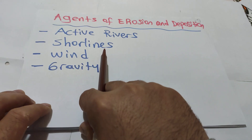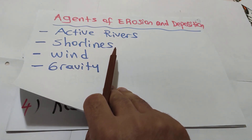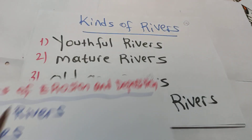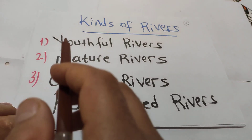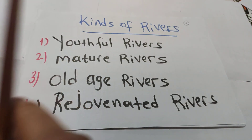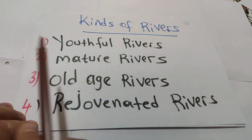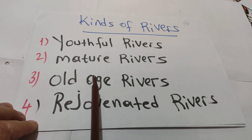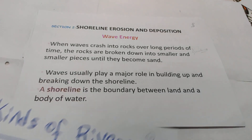We have already finished section one on active rivers, and we are now going to study section two: shoreline. Wind will be section three and gravity will be section four. From our first video, there are four kinds of rivers: youthful rivers, mature rivers, old age rivers, and rejuvenated rivers. Please don't forget them.